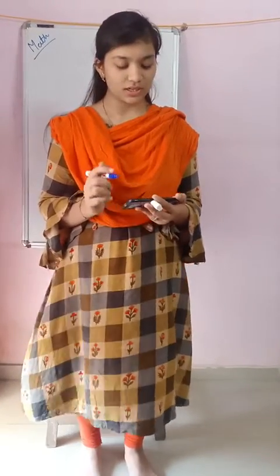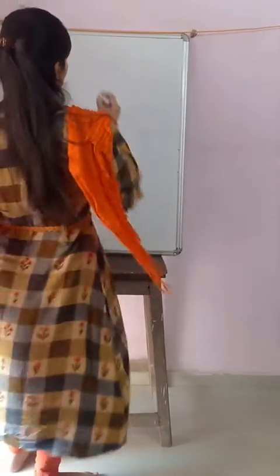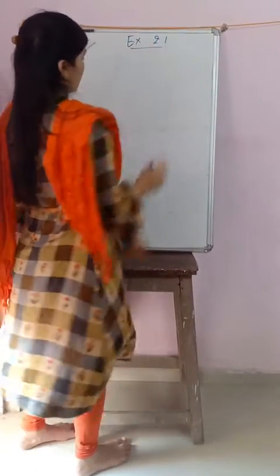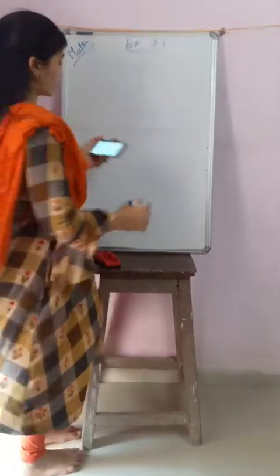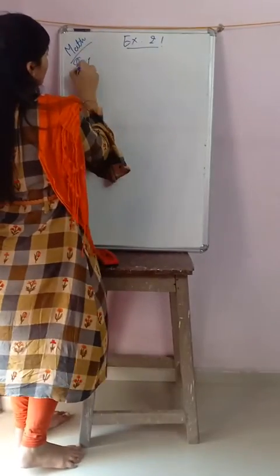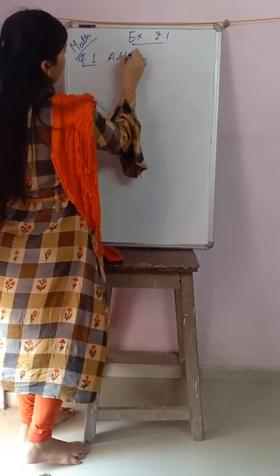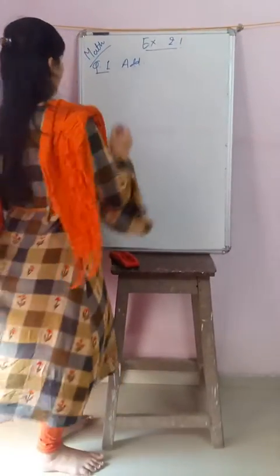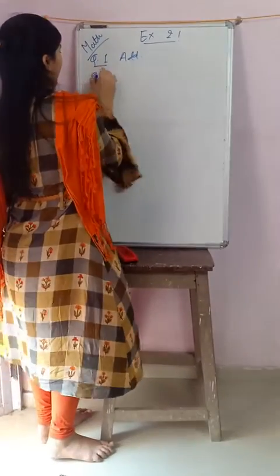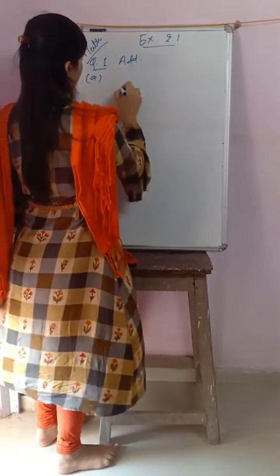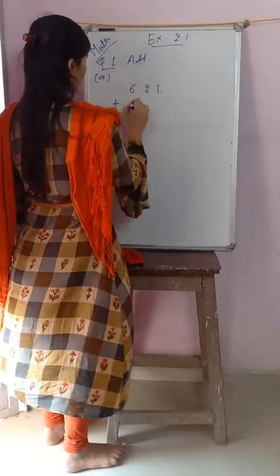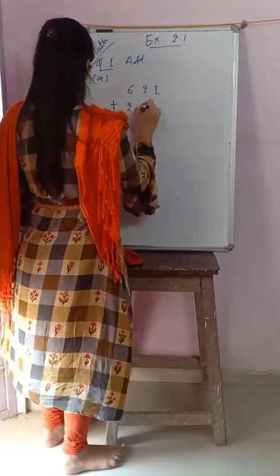Okay students, now we are trying to solve our next exercise, that is Exercise 2.1. The first question says: add the following. Question number one, add. I am solving a1, that is 621 plus 256.